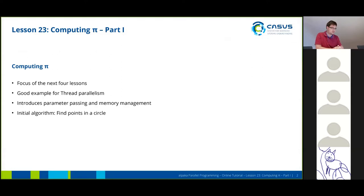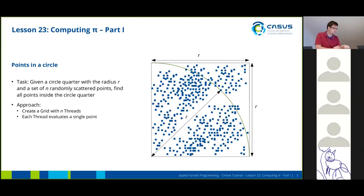We're going to find points in a circle. This is our task. We have a circle or a quarter of a circle with a defined radius and we have n randomly scattered points, some of which are inside the circle and some of which are not. Our task is to find all points that lie inside the circle quarter.